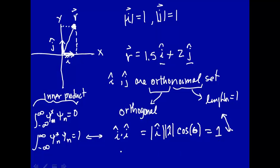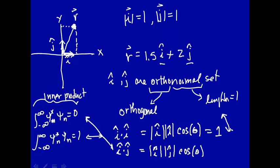Let's see if they're orthogonal. So let's take the two different vectors î and ĵ and take the dot product of them — that's equivalent to taking two different wave functions, multiplying them together, and integrating over all space. That's the length of i times the length of j times the cosine of the angle between the two. The angle between î and ĵ is 90 degrees, and the cosine of 90 is 0, so indeed that's 0. So î and ĵ form an orthonormal basis set, because they're orthogonal and they're normalized.